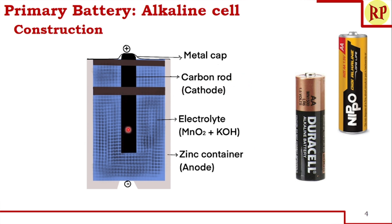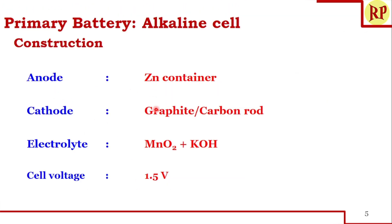To summarize the construction: the anode is a zinc container, cathode is a graphite or carbon rod, and the electrolyte is a mixture of MnO2 and KOH. The top edge has a metal cap which is the positive end, and the bottom is the negative end. The cell voltage is similar to dry cell, that is 1.5 volts.